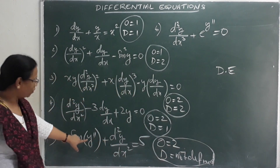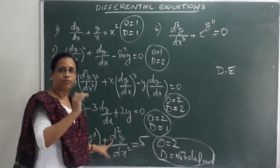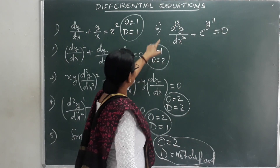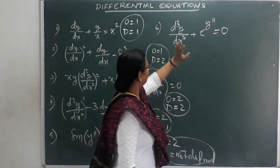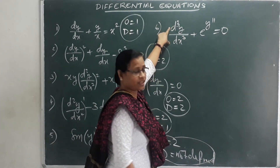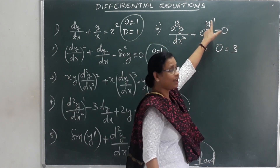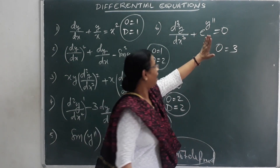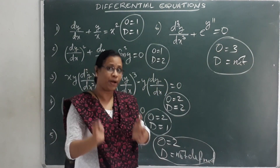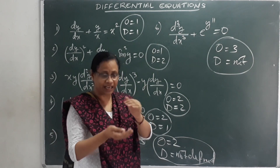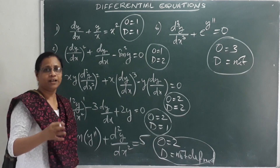The sixth question is: d²y/dx² + e^(y'') = 0. The order is 2. When a derivative appears inside an exponential, in a denominator, or inside a trigonometric function (angle), we cannot define the degree. That is why the degree is not defined in such cases.